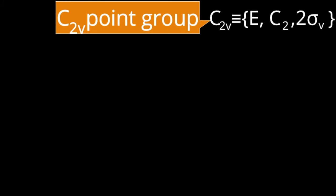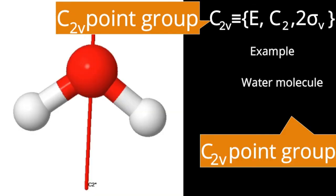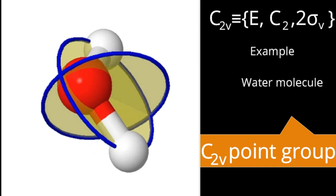The label C2V indicates a principal axis C2 and vertical planes. The best known example for the C2V point group is H2O, the water molecule. There is a C2 axis and these two planes are present.